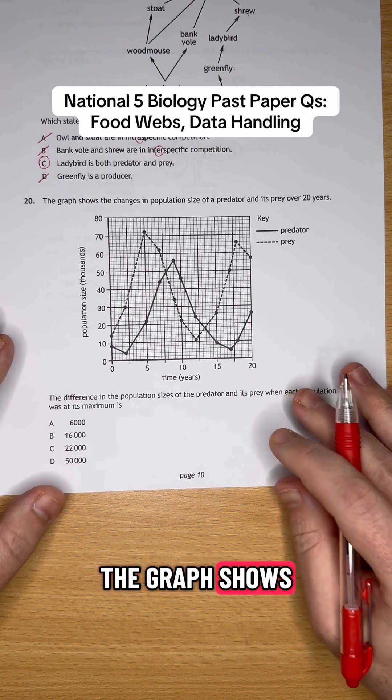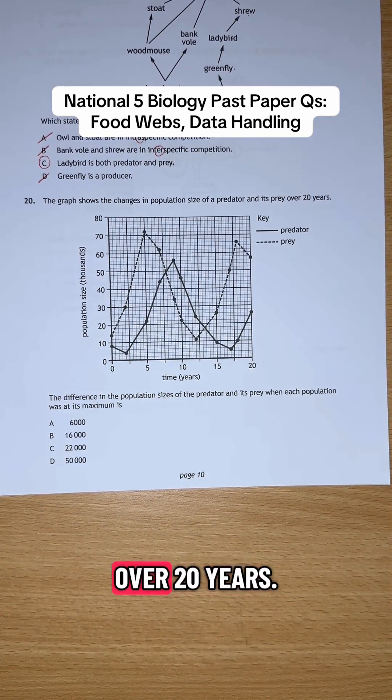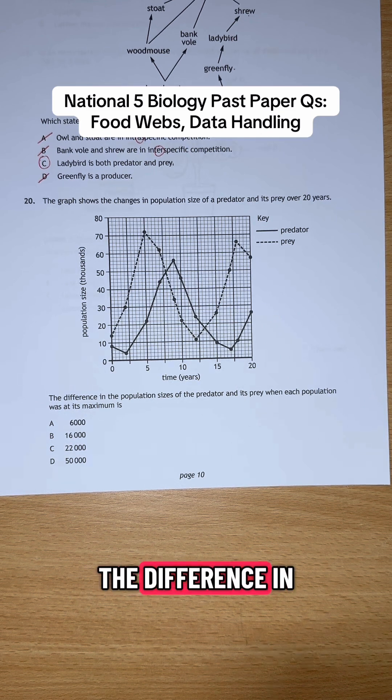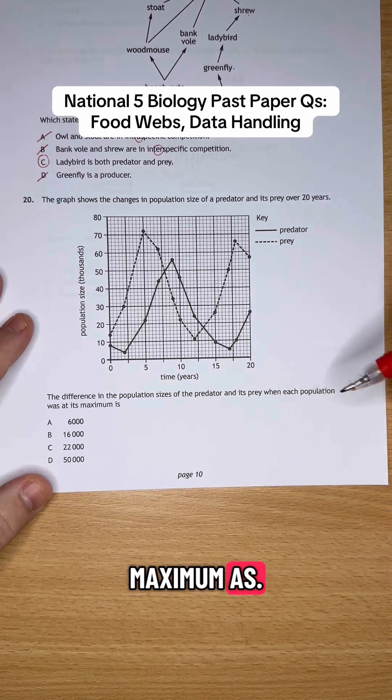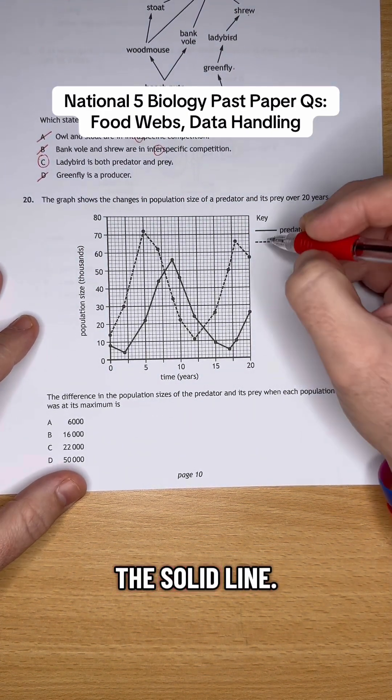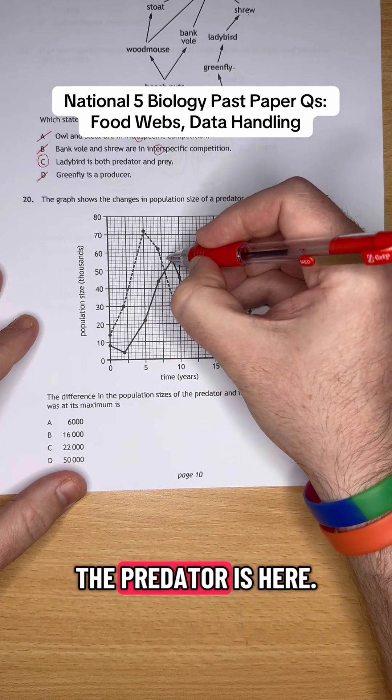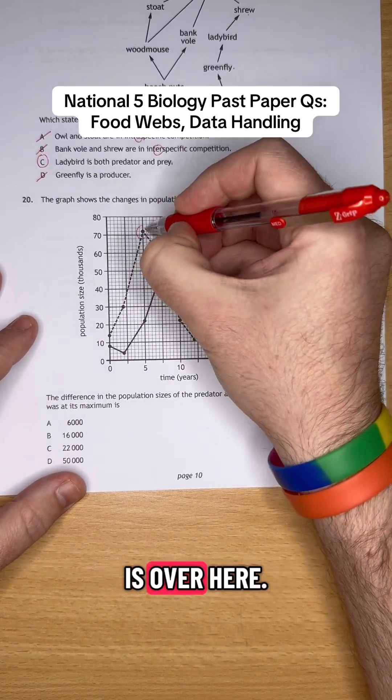Okay, question 20. The graph shows the changes in population size of a predator and a prey over 20 years. The difference in the population sizes of the predator and its prey when each population was at its maximum is... So let's find out where the maximums are. So predator is the solid line. The maximum for the predator is here. And for the prey, the maximum is over here.